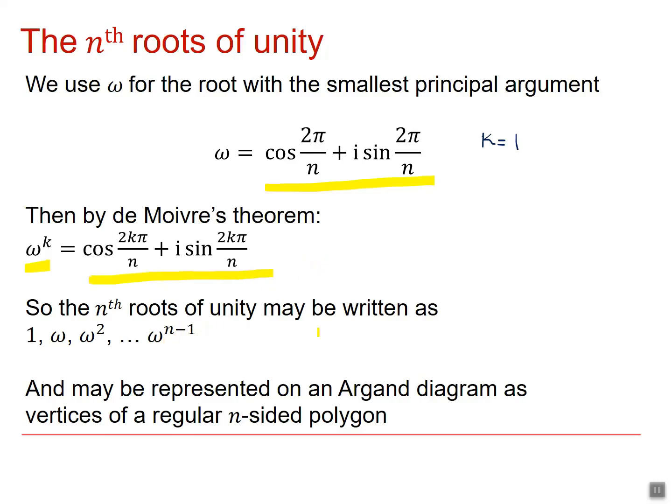So the nth roots of unity can be written as a sequence 1, omega, all the way up to omega to the n minus 1. And we've already seen they can be represented on an Argand diagram as vertices of a regular n-sided polygon.